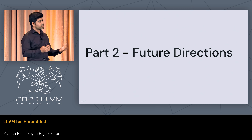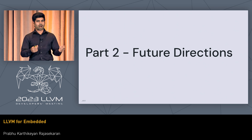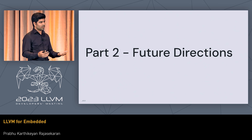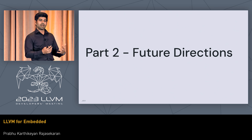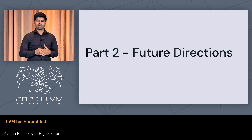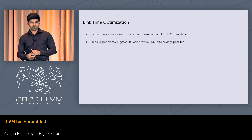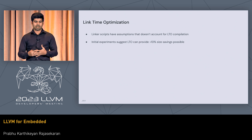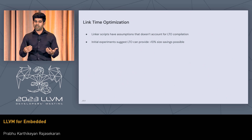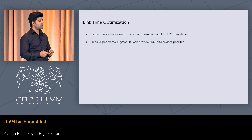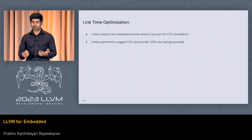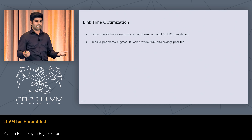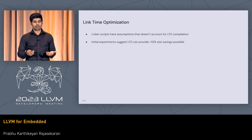This brings us to the second part about future directions. We had a four-hour workshop yesterday talking about this, so the next few minutes won't do full justice, but I want to highlight some things we would like to see. One of the things we want to see is link time optimization used in embedded spaces. What is blocking us today is that the linker scripts have assumptions that don't account for LTO compilation. Some initial experiments suggest there could be up to 10% size savings for some of our products, but we couldn't fully verify the artifact because it's not verifiable yet. One of our team members is prioritizing this work and we would like to see this support land upstream.